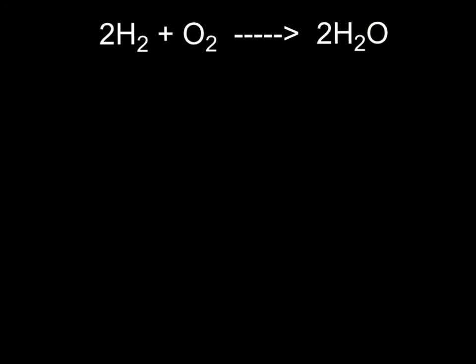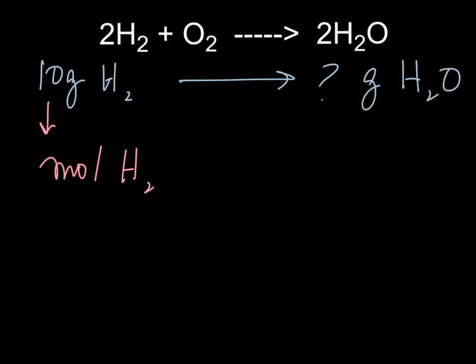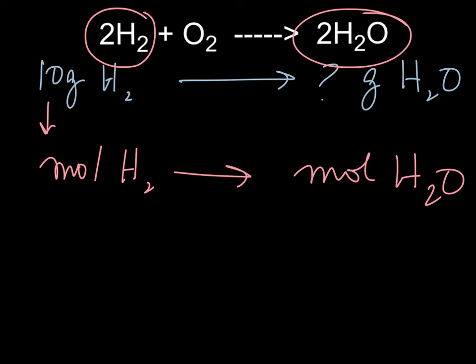All right. So again, very quickly, just to recap, we were given 10 grams of H2 gas. We're supposed to find out how many grams of H2O could be produced. And what we did, we first converted this to moles of H2, and then we calculated how many moles of H2O can be produced. And we used this relationship between these two reactants and the product. And then from here, we were able to find out how many grams of H2O could be produced. And that is really the way you have to do these problems.